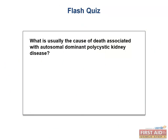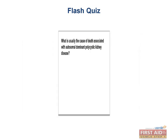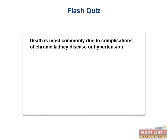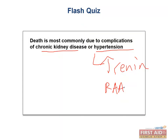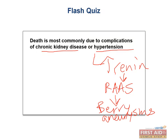Flash quiz: What is usually the cause of death associated with autosomal dominant polycystic kidney disease? Death is most commonly due to complications of chronic kidney disease or hypertension. The hypertension is caused by increased renin production, activating the renin-angiotensin-aldosterone system, leading to hypertension and complications such as berry aneurysms, which can rupture and lead to hemorrhage in the brain and death.